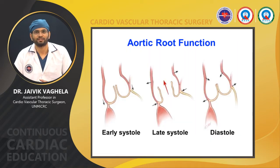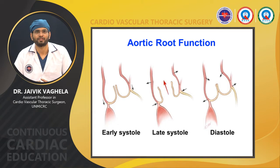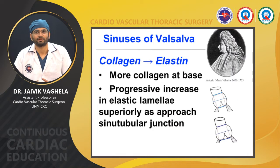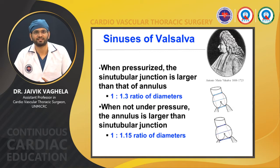The function of the aortic root involves early systole, late systole, and diastole. During early systole the valves open, and during diastole they close. The aortic root is not uniform — it is not simply tubular or circular; it is dilated at the aortic annulus part. There is more collagen at the base, and as we go upward there is a progressive increase in elastic lamellae. When pressurized, the sinotubular junction is larger than the annulus in a 1:3 diameter ratio, while without pressure the annulus is larger than the sinotubular junction.